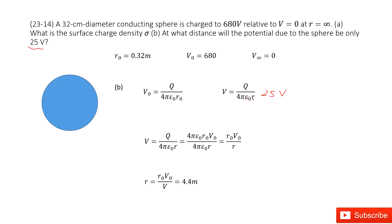You can see, now in this case, 4πε₀ is constant. You must know the Q. And the Q can be written as 4πε₀r₀V₀.